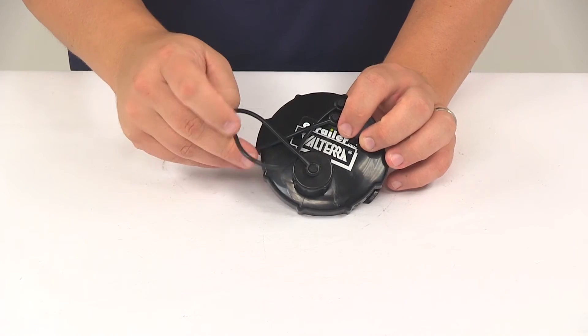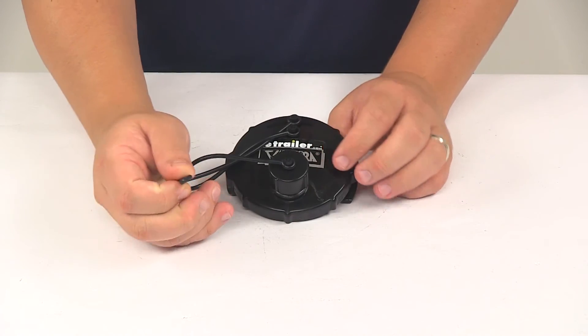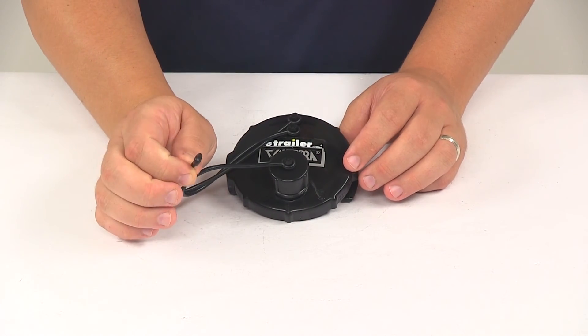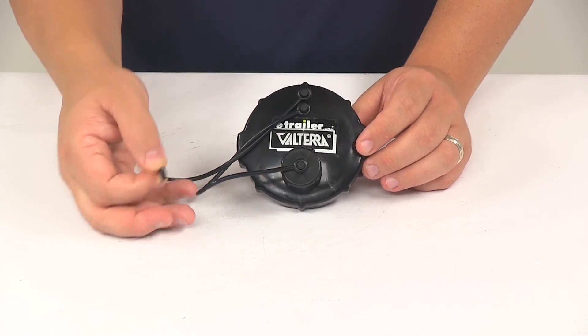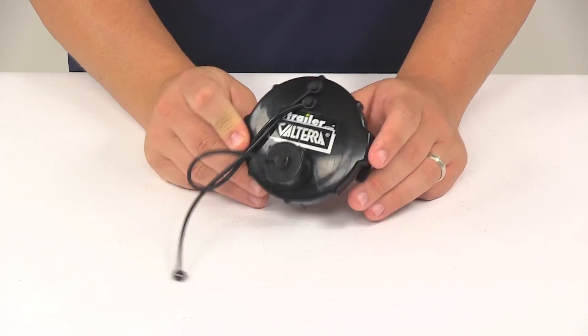So all you have to do is connect this end to the hub or the fitting on the RV. There should be a connection point on there and then you don't have to worry about misplacing or losing it.